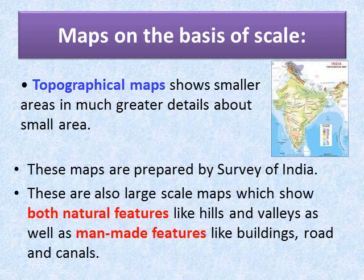Now we will learn about topographical maps. Topographical maps show smaller areas in much greater detail. Dear children, these maps are prepared by the Survey of India. These are also large scale maps which show both natural features like hills and valleys, as well as man-made features like buildings, roads, and canals.